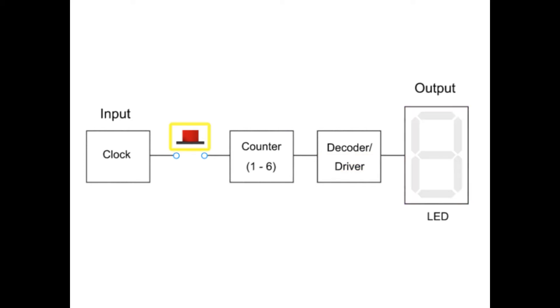When the push button is pressed or closed, a signal from the clock is sent to the counter. This signal starts a repeating up-counting sequence from 1 to 6. When the push button switch is opened, the counter will stop at a random number between 1 and 6.